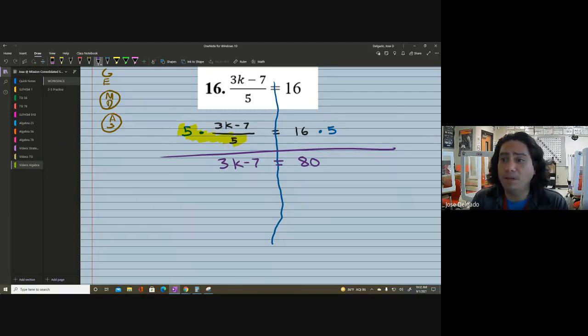So we're left with 3K minus 7 on the left side. We're going to have to do some work over here. 16 times 5. I am a big fan of using a 4 function calculator. This is what they're used for. They're used for doing basic math, basic computation. And it really helps us out. So on the right side of the equation, we got ourselves 16 times 5 equals 80.